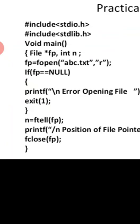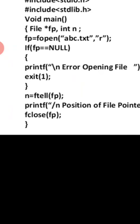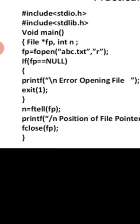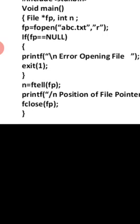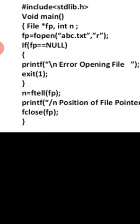Looking at the start of the program, we have two header files and then the main section where the program begins. We have a file pointer — the file pointer name is fp — and an integer n. We already have a file called abc.txt and we have opened it in read mode. fopen takes two parameters: the name of the file, which is abc, and the mode, which is read mode. The result is stored in file pointer fp. If fp equals null, it will declare an error opening the file.